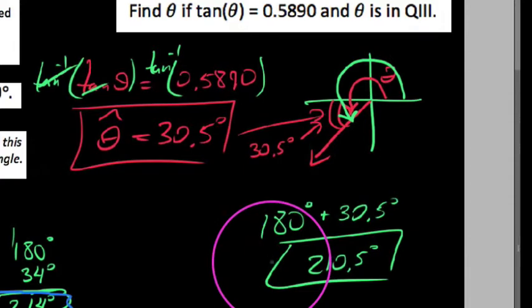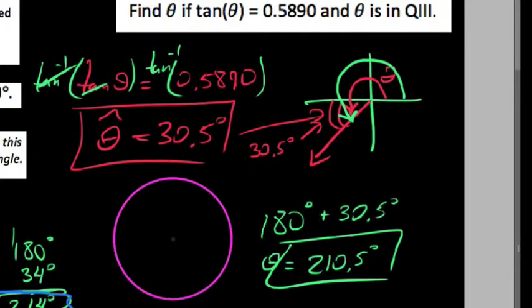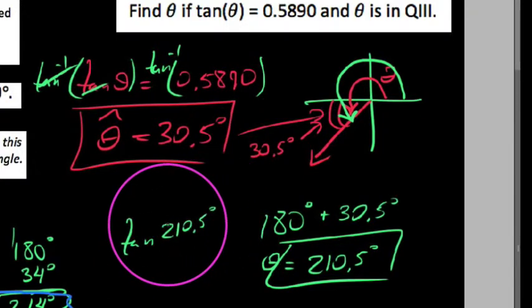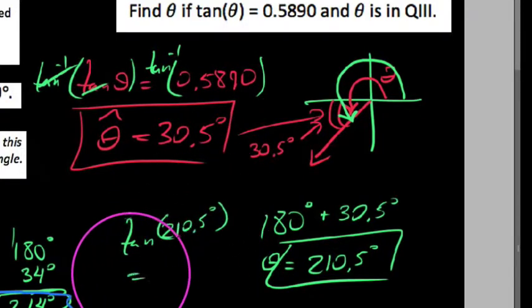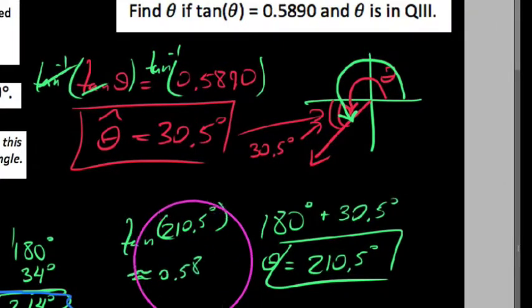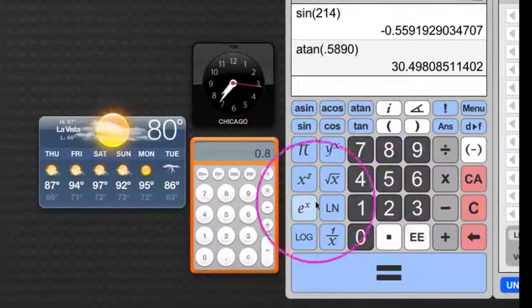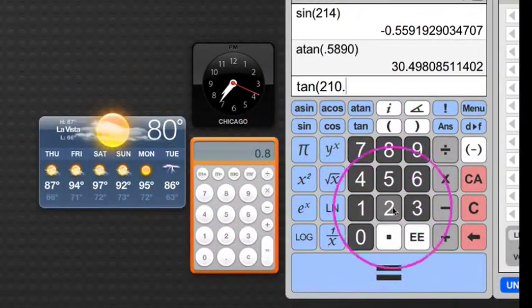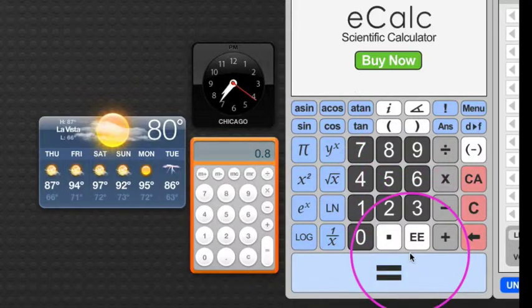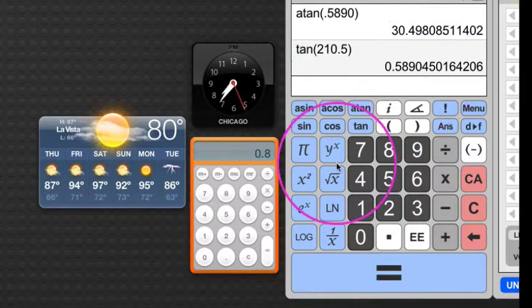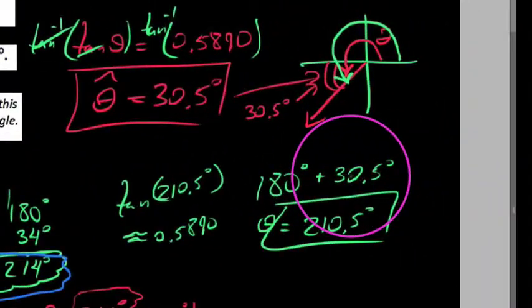And I just want to check this for theta. I want to check this by plugging it back into the original equation. So if I take the tangent of 210.5-ish, we do this, we should get about 0.5890. Just want to check. So we say tangent, tangent, 210.5, enter. And, well, you know, 0.5890, that's pretty slick, isn't it? So that's how you would use reference angles to kind of get you back to the actual angle when you're working backwards with the calculator. Cheers.